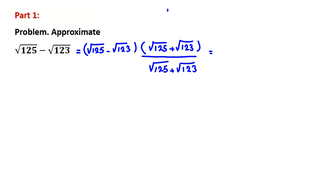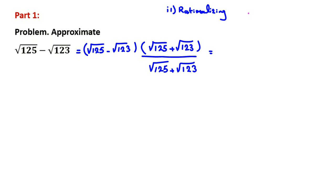For the numerator, we use something similar to rationalizing, and the key identity is: A squared minus B squared equals (A minus B)(A plus B).